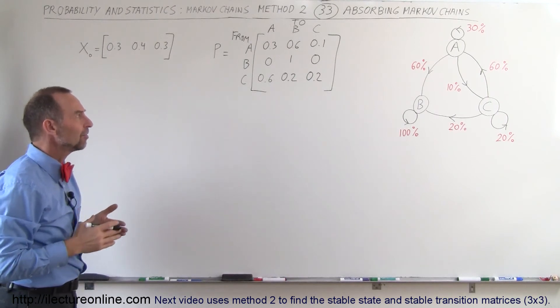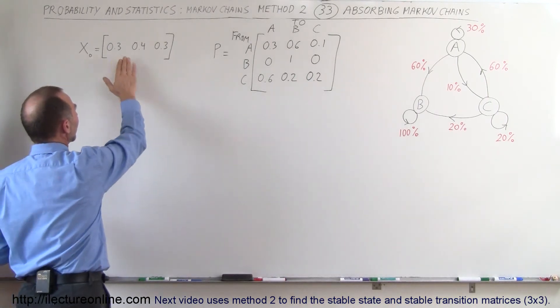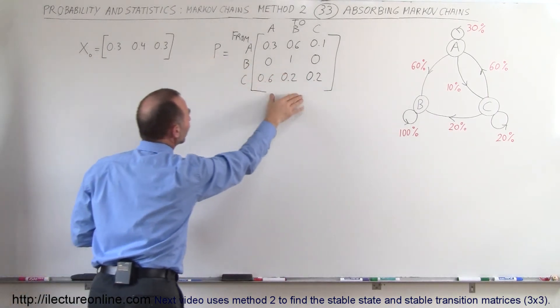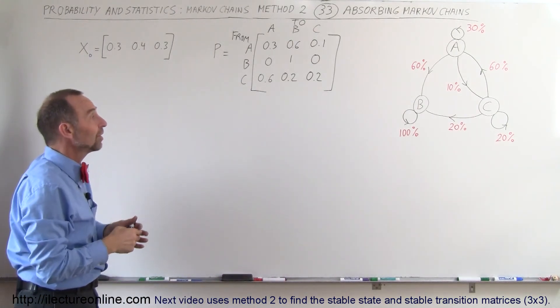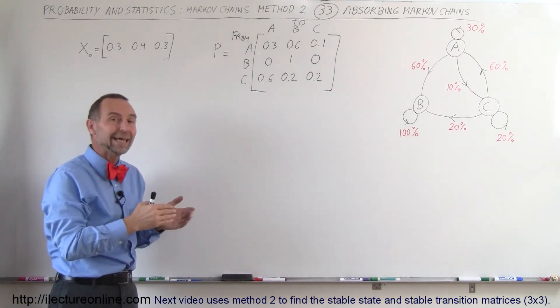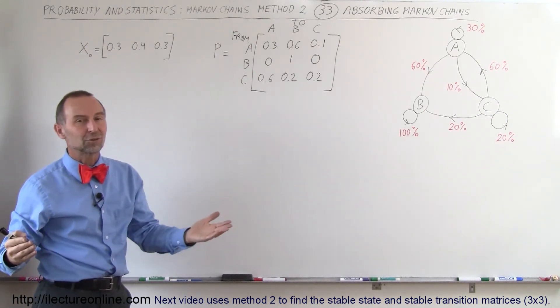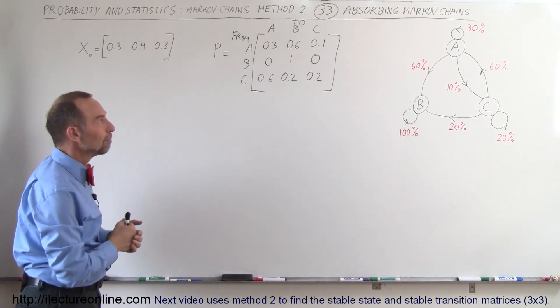So what happens now if we multiply the stable state matrix with the transition matrix and we do it over and over and over again, eventually we'll see that all the customers end up with B and none with A and C. And that is what we call an absorbing Markov chain.